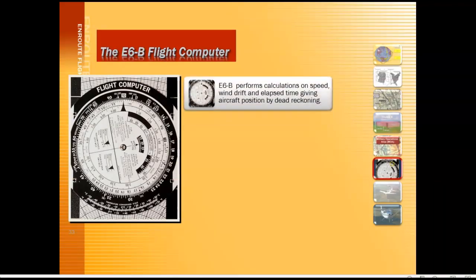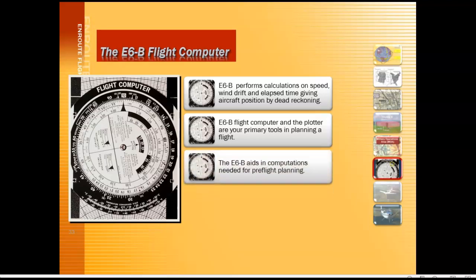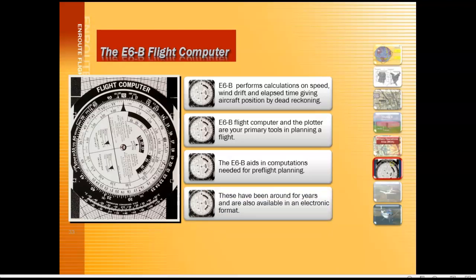The E6B performs calculations on speed, wind drift, and elapsed time so that you can get your aircraft position by dead reckoning. The E6B flight computer and the plotter are your primary tools when planning a cross-country flight. The computer side aids in computations needed for preflight planning. This computer has been around for years and is also available in electronic format, but we first need to learn how to use the manual computer before moving on to the electronic version.